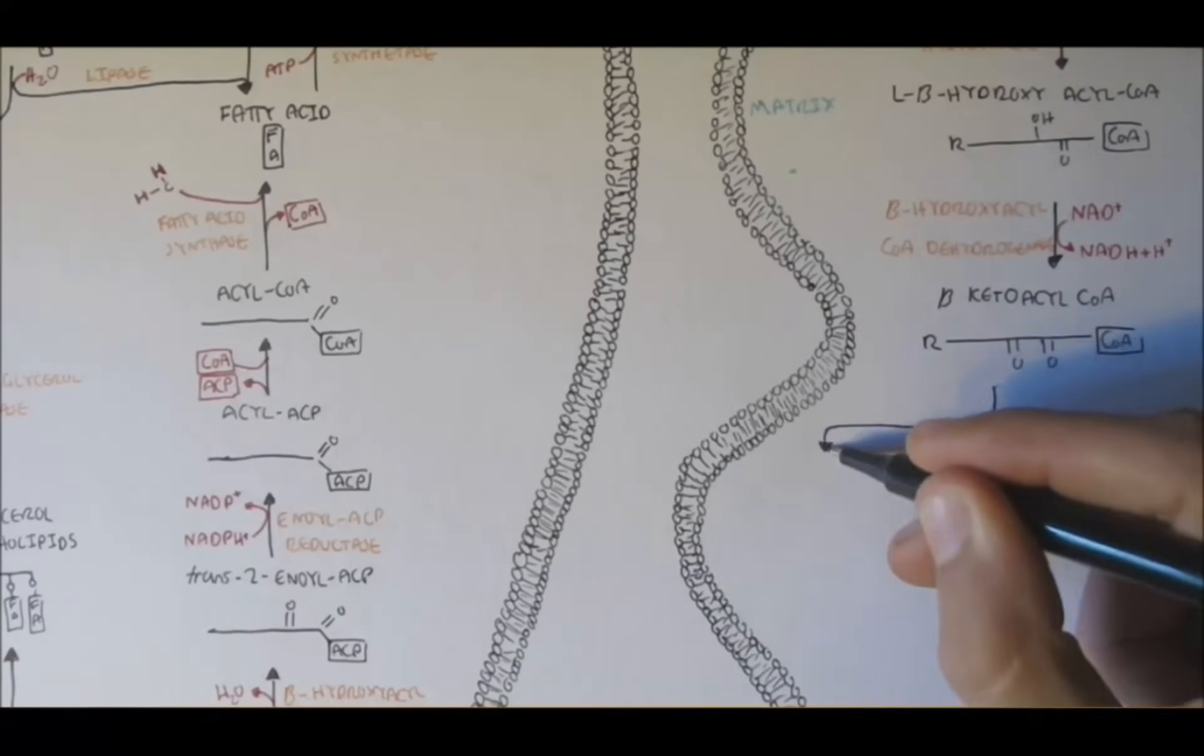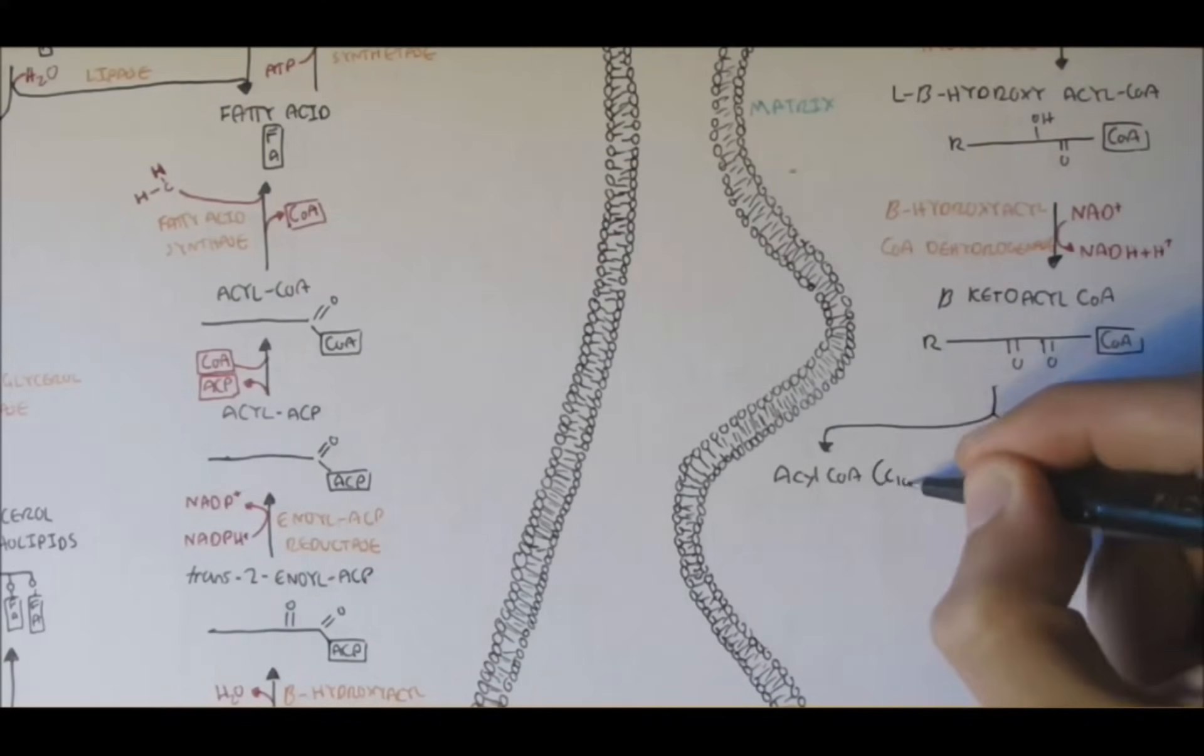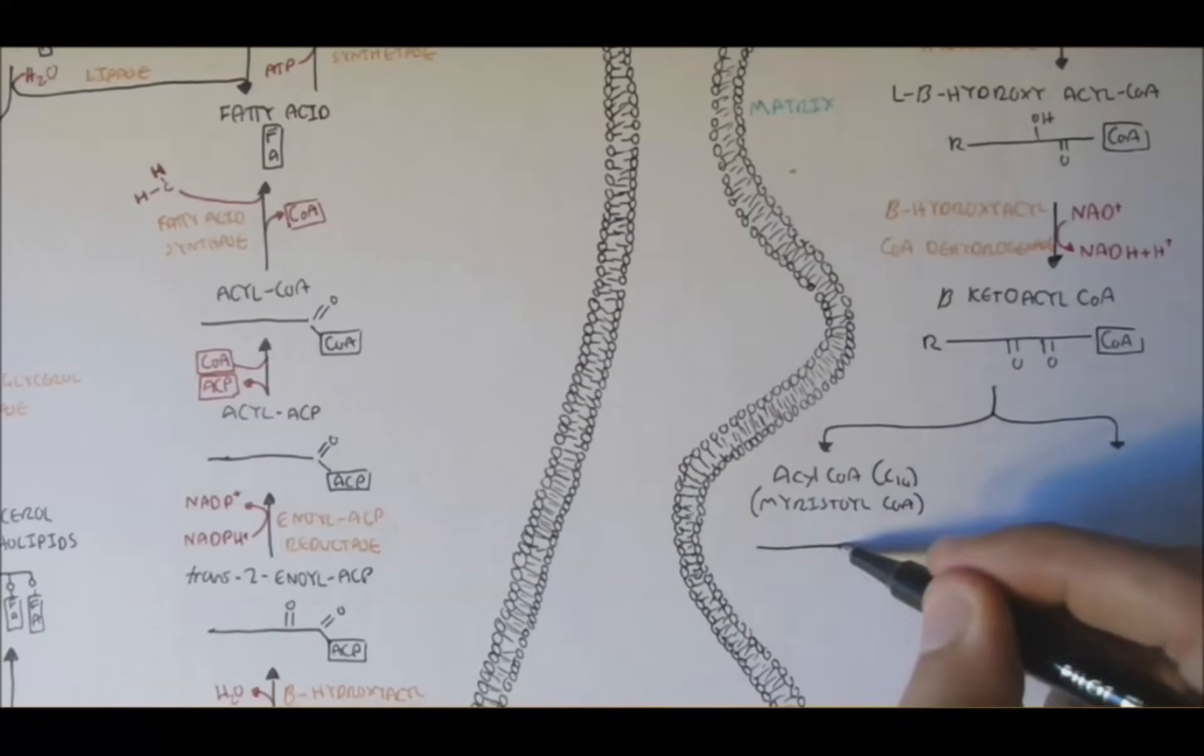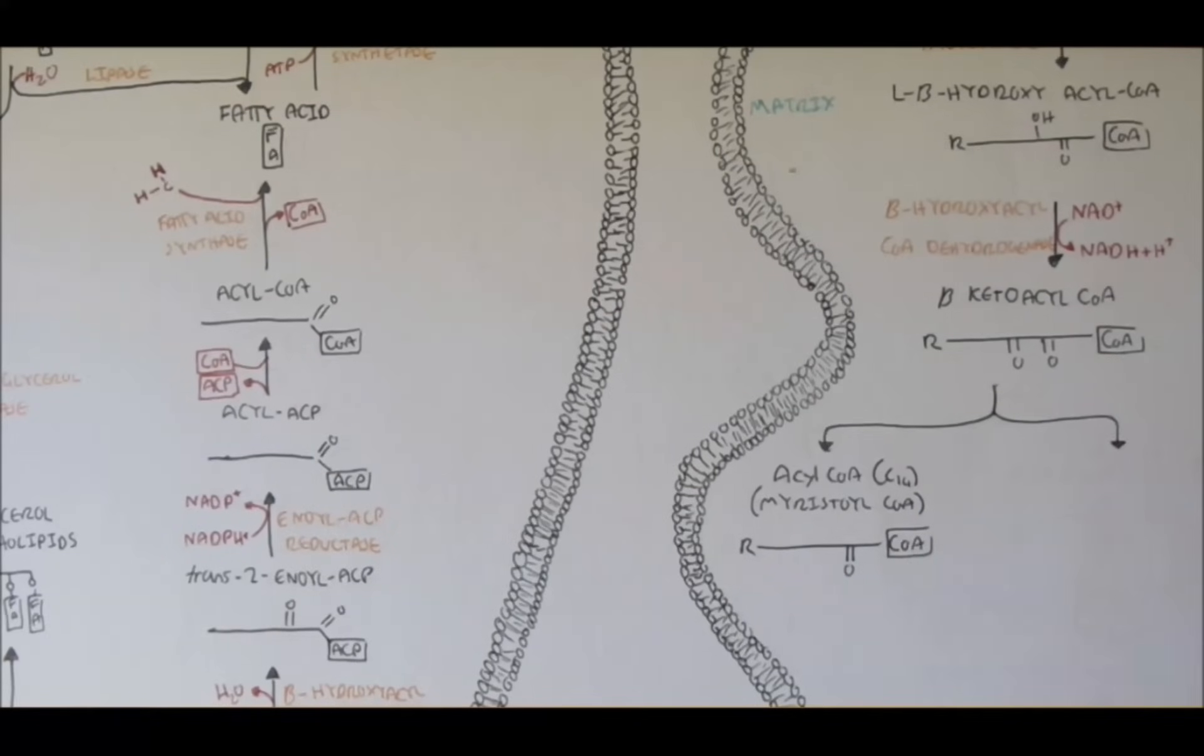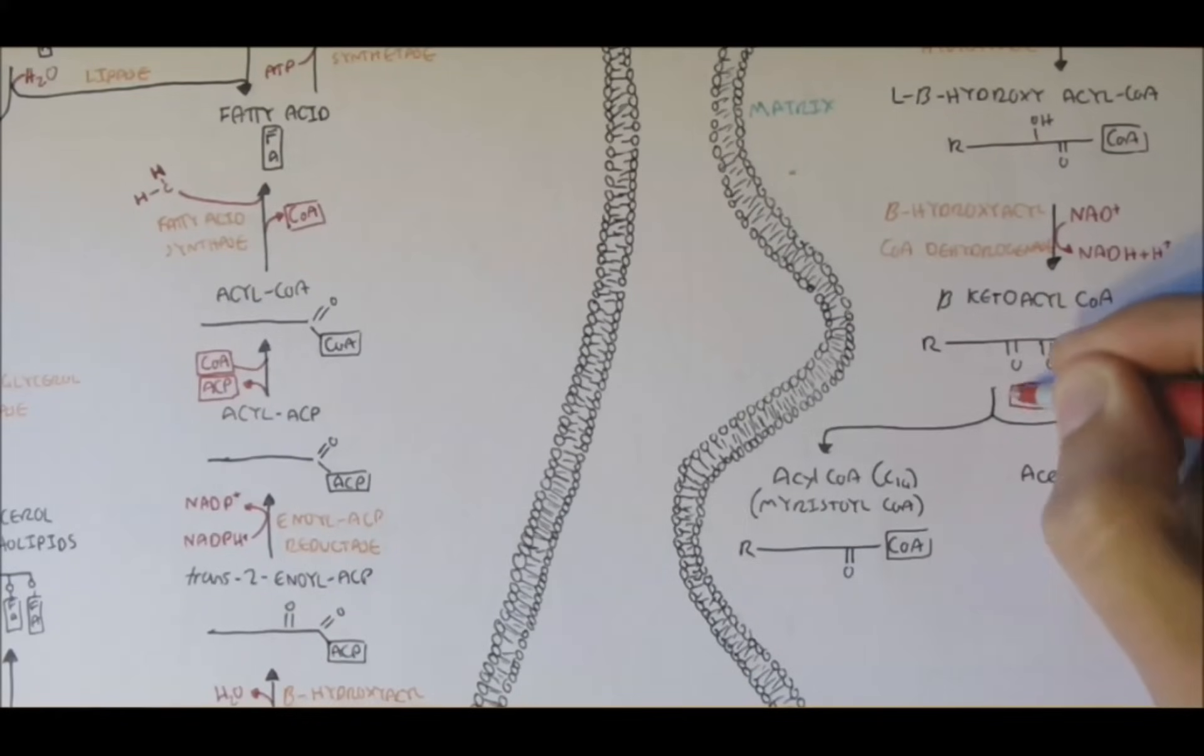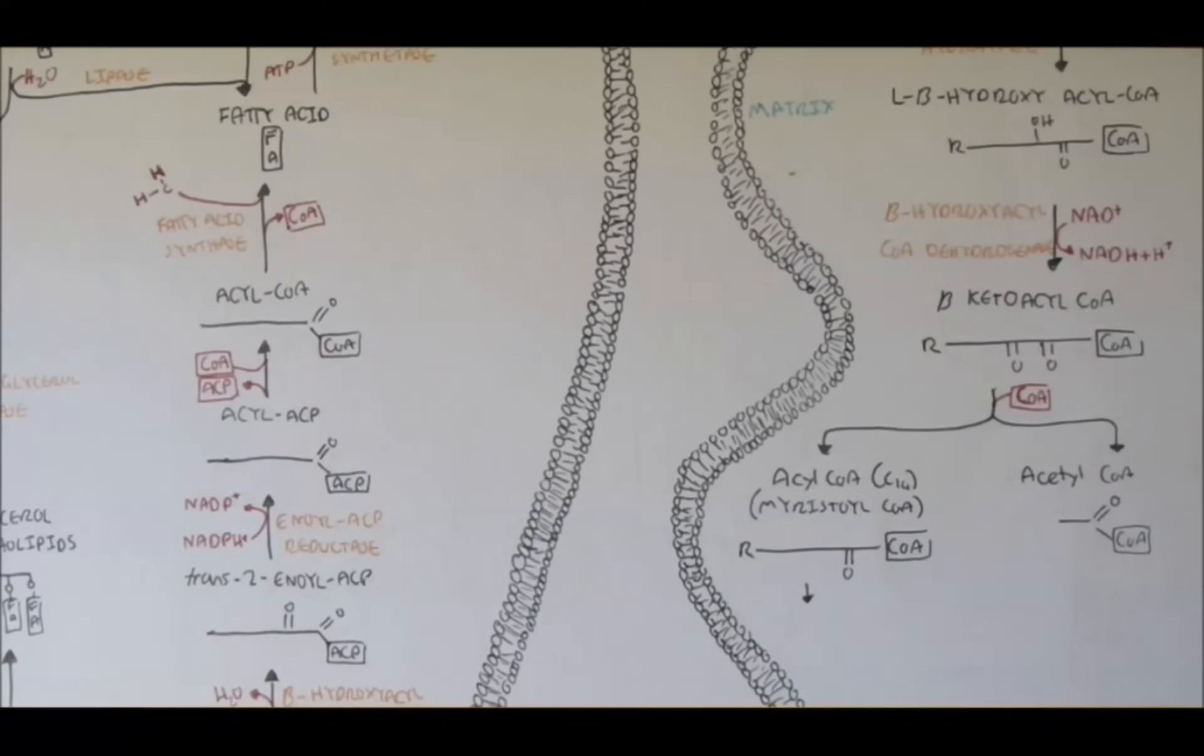Beta-ketoacyl-CoA will cleave two carbons off, forming 14-carbon fatty acyl-CoA called myristoyl-CoA. The CoA was obtained in the reaction. And also, the two carbons with CoA that broke off is acetyl-CoA. So, that was how we formed one acetyl-CoA.